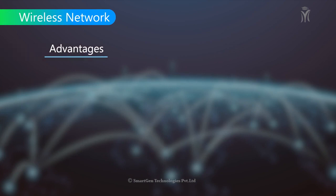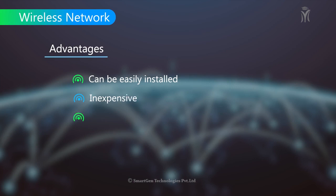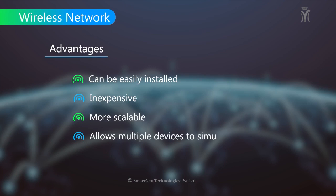Advantages of wireless networks: They can be easily installed, they are inexpensive as no wires are used, they are more scalable, and they allow multiple devices to simultaneously use the same wireless connection.